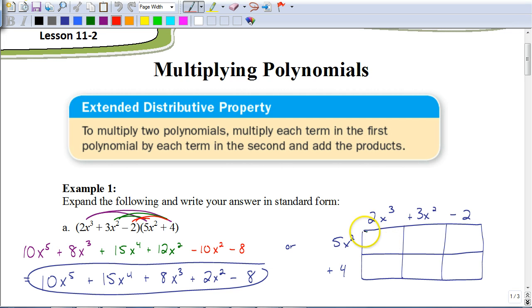But, when we multiply these, 5 times 2 is 10. x squared times x cubed would be x to the 5th. 5x squared times 3x squared would be a positive 15x to the 4th power. Remember, when you're multiplying, the bases are the same. What we're doing is we're adding the exponents.